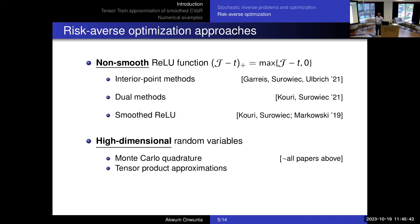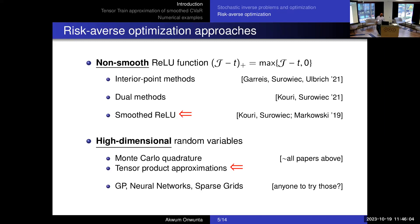The major takeaway is that functional TT — tensor train approximation — is a really efficient format for smooth functions, and in most cases exhibits exponential convergence. These risk measures, especially CVaR, are usually non-smooth but very interesting to use. Optimizing them is very difficult, but using a smoothed approximation, which we've proposed, makes our problem converge at least linearly. This can also be improved using a multilevel Monte Carlo correction. Most of the details are in the paper.